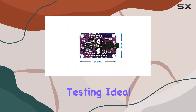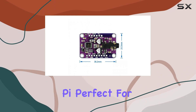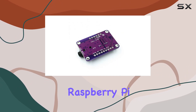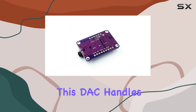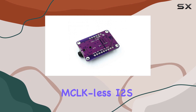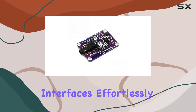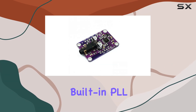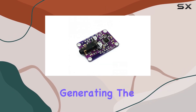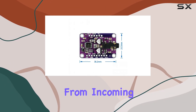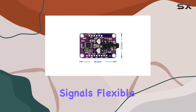Ideal for Raspberry Pi: Perfect for Raspberry Pi enthusiasts, this DAC handles MCLK-less I2S interfaces effortlessly, thanks to a built-in PLL generating the proper clock from incoming signals.